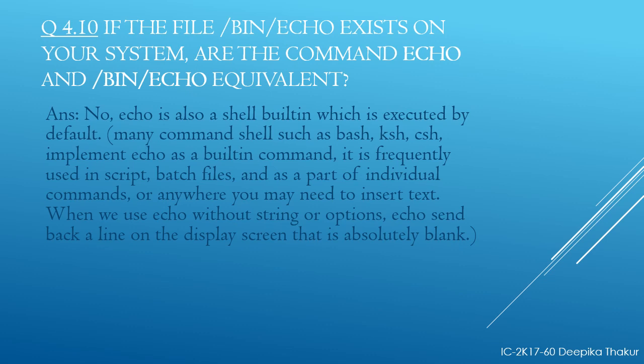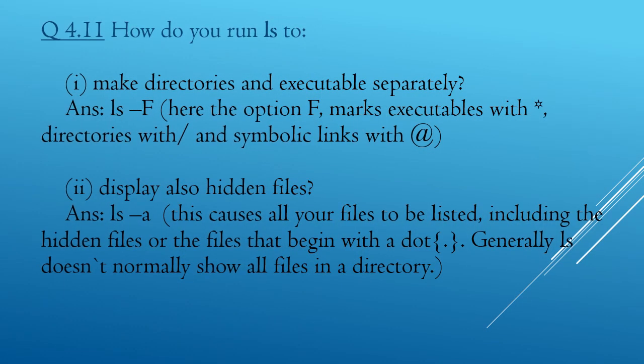When we use echo without a string or option, echo sends a blank line on the display screen. Here comes the next question: how do you run ls to mark directories and executables separately? The answer is ls -F. With the command ls using the option -F, it marks executables with an asterisk, directories with a forward slash, and symbolic links with the @ symbol.